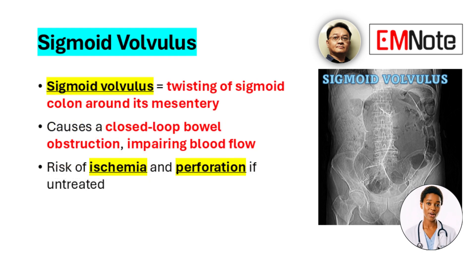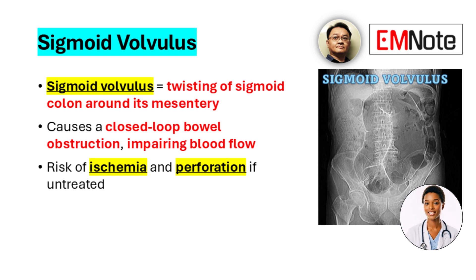The torsion, typically exceeding 180 degrees, obstructs the lumen and impairs blood flow, leading to ischemia or perforation if untreated.